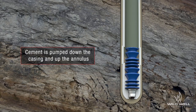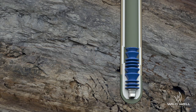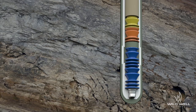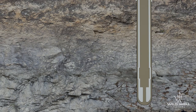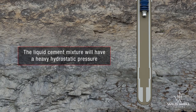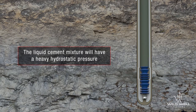To create an annular barrier, the driller will pump cement down the casing, and the cement will then travel up and fill the annulus to a predetermined top of cement, or TOC. During this operation, the liquid cement, also known as a slurry, has a hydrostatic pressure that it creates as it circulates down the casing and up the small annulus.